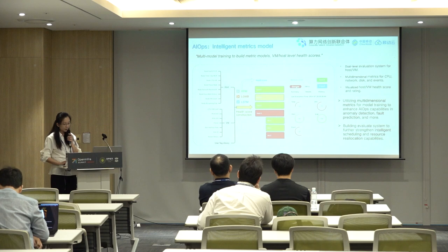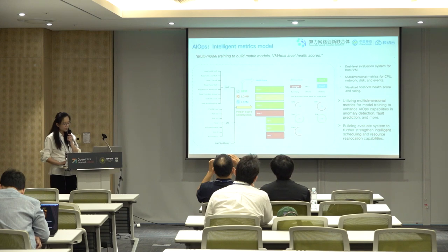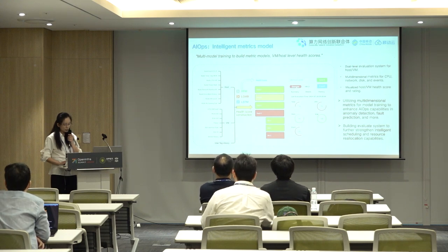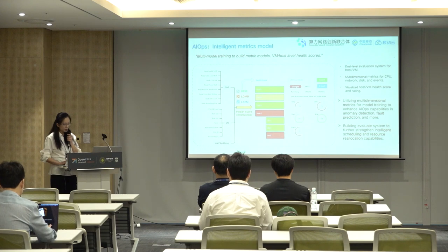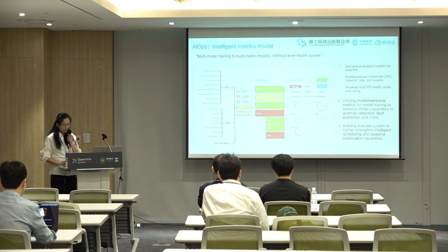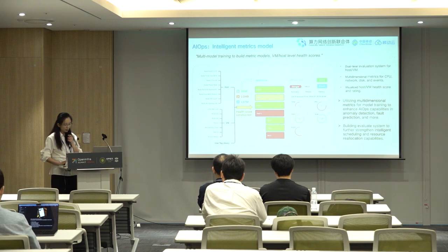In order to make use of these metrics, we use multi-model training to build metric models, such as virtual machine and server-level health scores. These health scores help us utilize multi-dimensional metrics for model training to enhance AIOps capabilities in anomaly detection, fault prediction, and more. We are also building evaluation systems to further strengthen intelligent scheduling and resource reallocation capabilities.